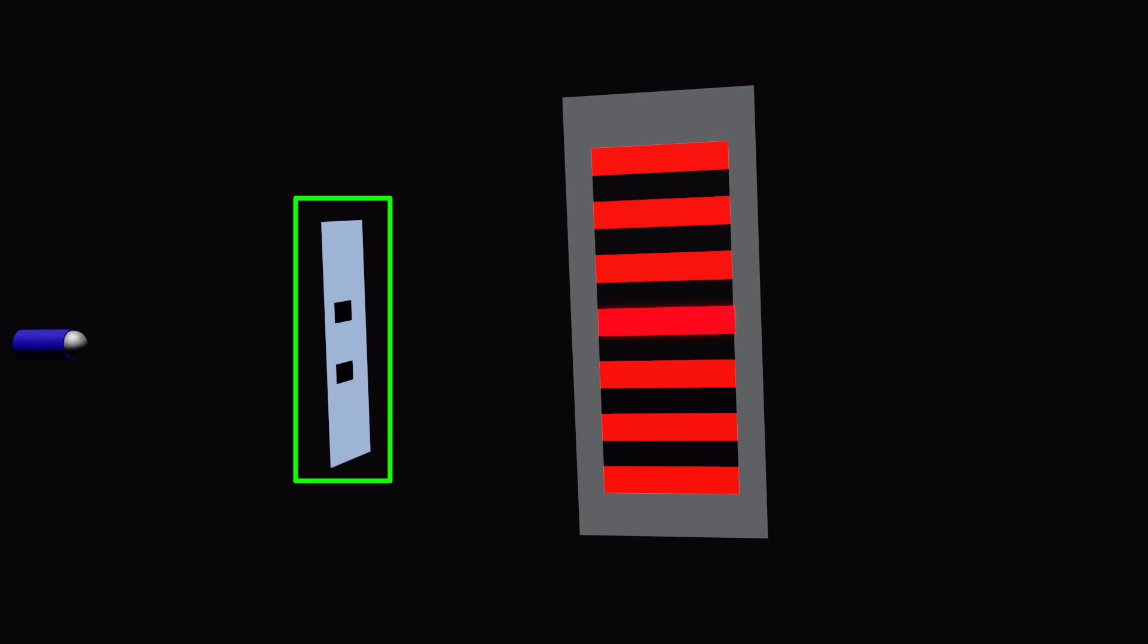In a double slit experiment, the bright and dark bands observed in the interference pattern are collectively referred to as fringes. The width of a fringe is known as fringe spacing. The distance of a fringe from the central bright fringe is called fringe position.